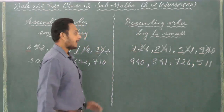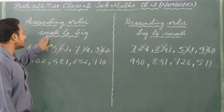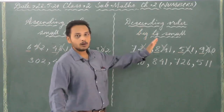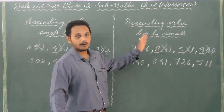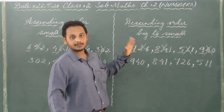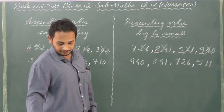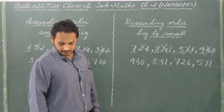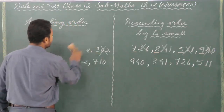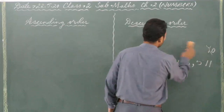I hope you have understood ascending order and descending order. To make it clear once again: ascending order means small to big or smaller to bigger, and descending order means big to small or bigger to smaller. You have to arrange the given numbers in this way based on whether ascending or descending is asked. So based on this, you have exercises on page number 20. I will be doing the first numbers with you and the remaining numbers you will do yourself in your maths book.